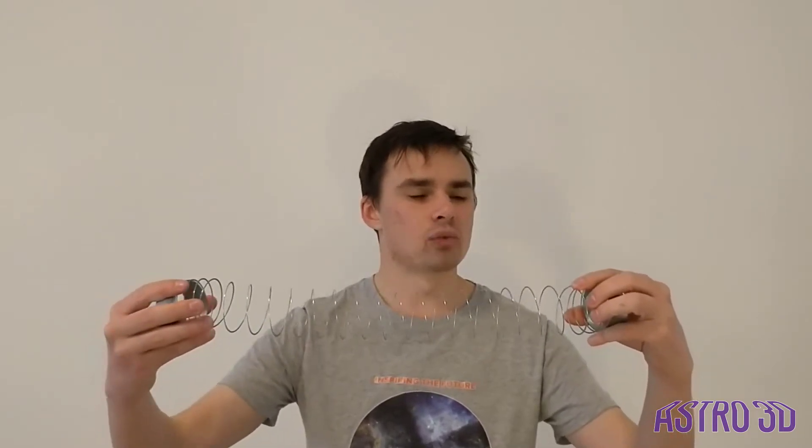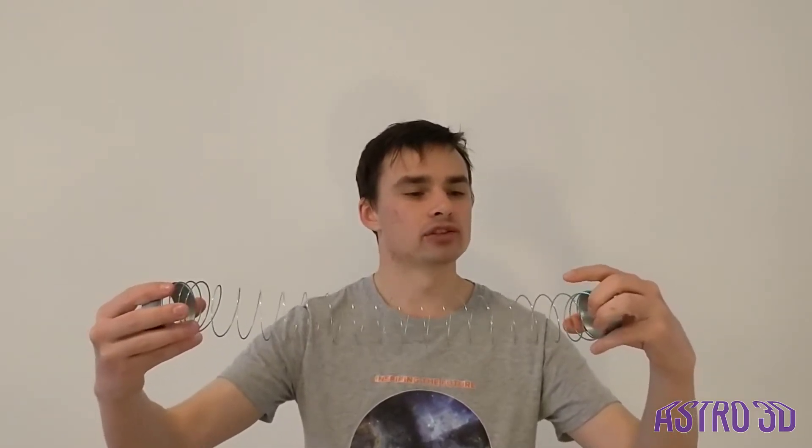An important characteristic of waves is what we call the wavelength, which is the distance between two peaks of the wave. Today we're going to visualize this with slinkies, where we can imagine that each link in the slinky is a wave, and so the distance between two links is the wavelength. Light can have a wide range of different wavelengths.